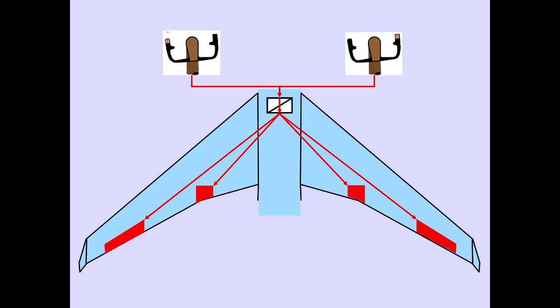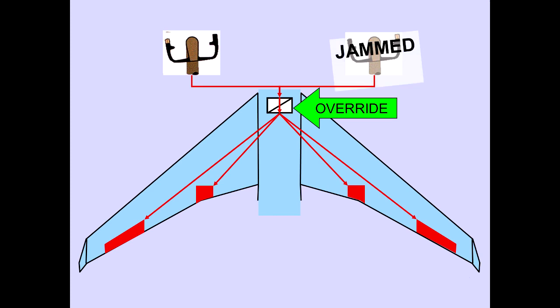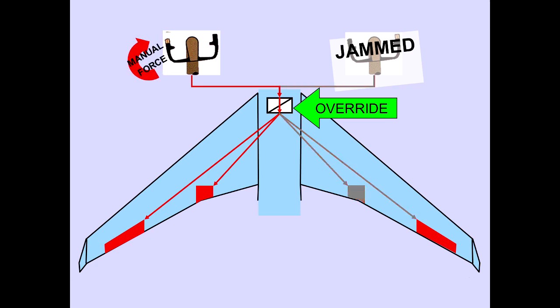The control wheels are connected through a control wheel override mechanism, which allows either wheel to move independently if the other wheel jams and a significant manual force is applied. Roll control is then available through the ailerons on the wing corresponding to the free control wheel.